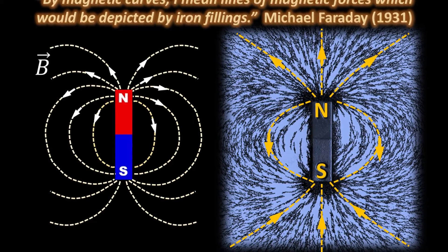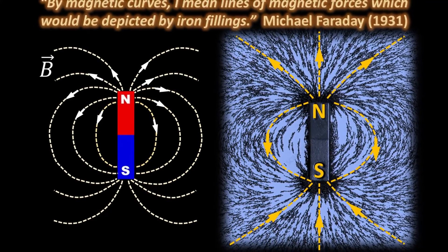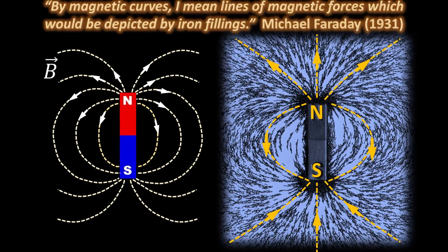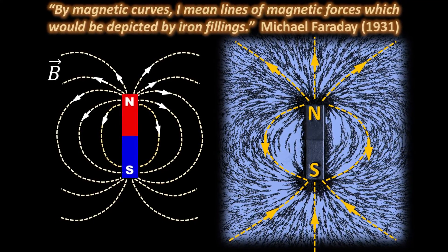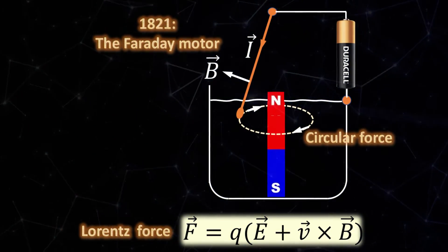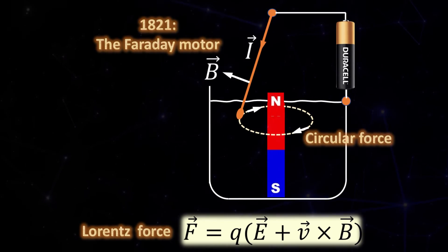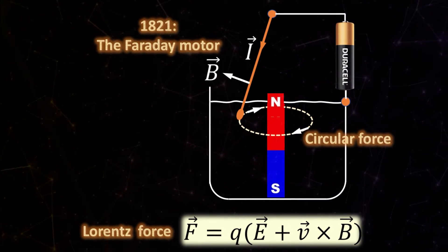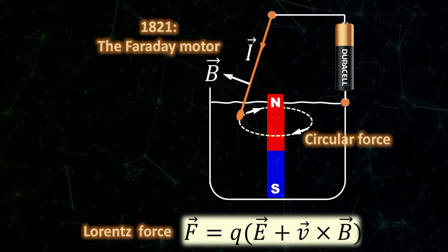As Faraday later explained in 1831, by magnetic curves I mean lines of magnetic forces which would be depicted by iron filings. In 1821 Faraday set up to test his ideas of such curved lines of forces. What follows demonstrate Faraday's genius.